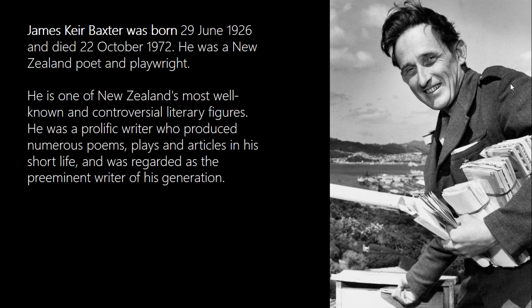Let's first speak about the poet. James K. Baxter was born on the 29th of June 1926 and he died on the 22nd of October 1972. He was a New Zealand poet and playwright, regarded as one of New Zealand's most well-known and controversial literary figures. He was very prolific, producing numerous poems, plays, and articles in his short life and is regarded as a preeminent writer of his generation.